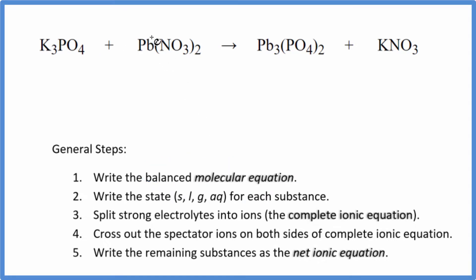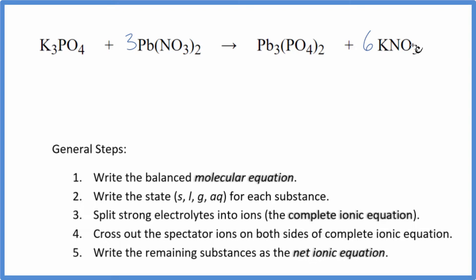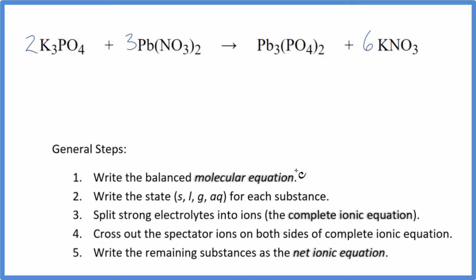When I look at this, I see there's one lead here and three leads here, so I'm going to put a 3 in front of the lead-2 nitrate. Leads are balanced. Now I have 3 nitrates times 2, so 6 nitrates — I'll put a 6 here. Now I have 6 nitrates and 6 potassiums. If I put a 2 in front of K3PO4, that's 2 times 3, giving 6 potassiums, and then 2 phosphates on each side. So we're done — that's the balanced molecular equation.